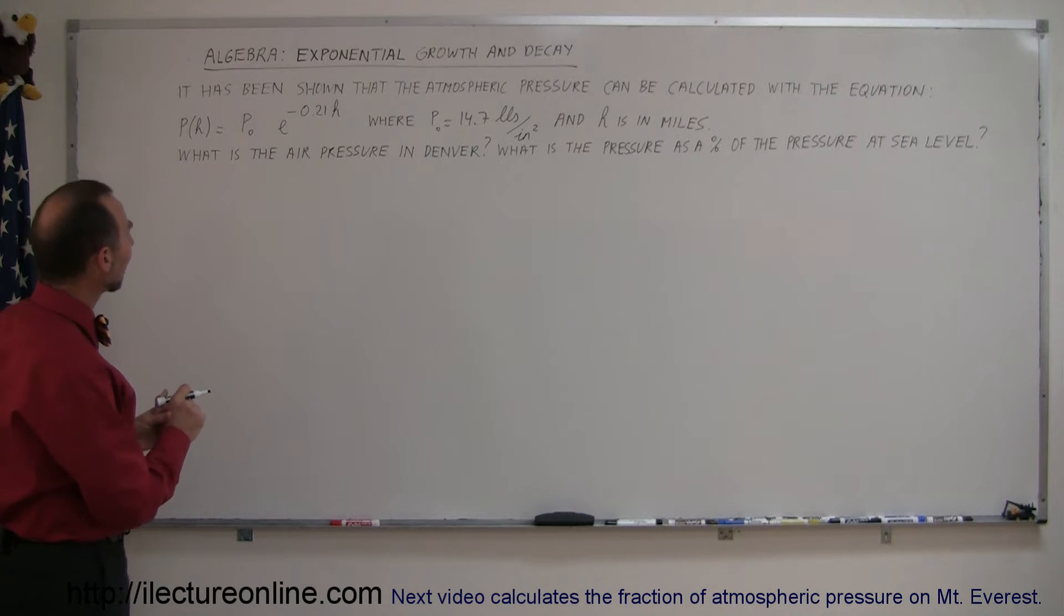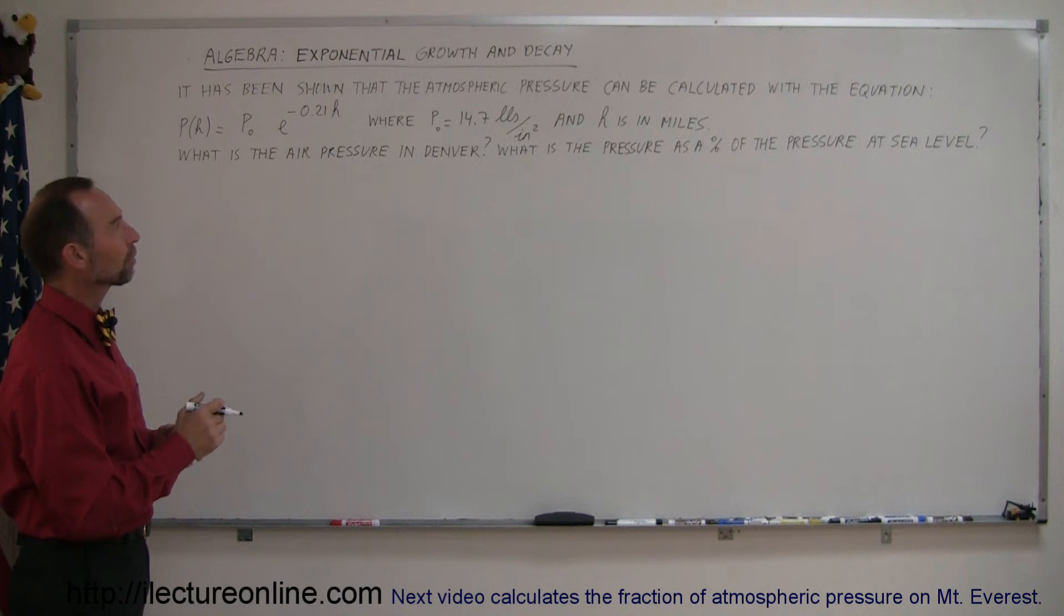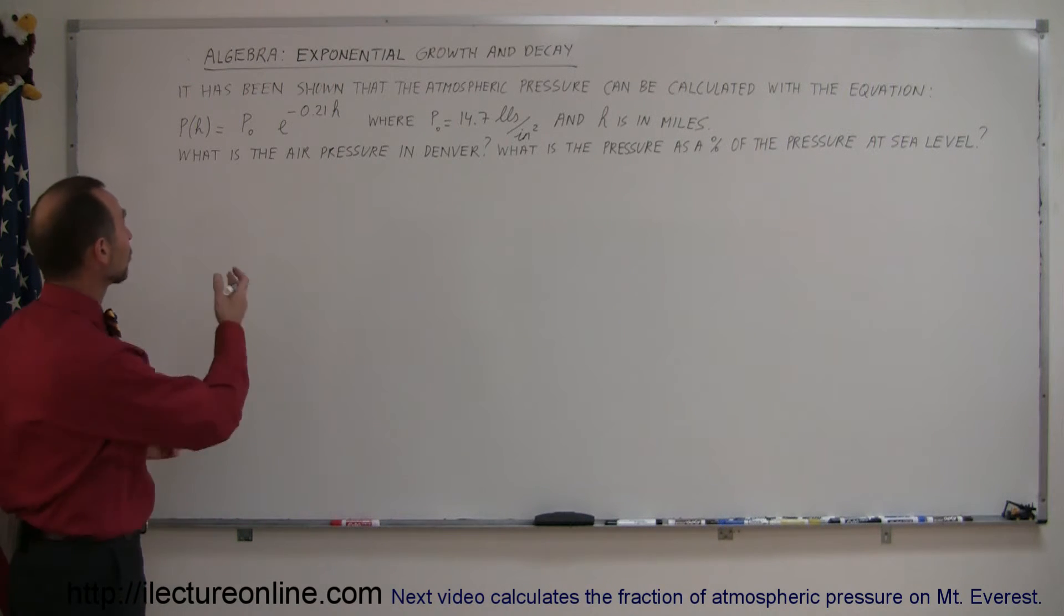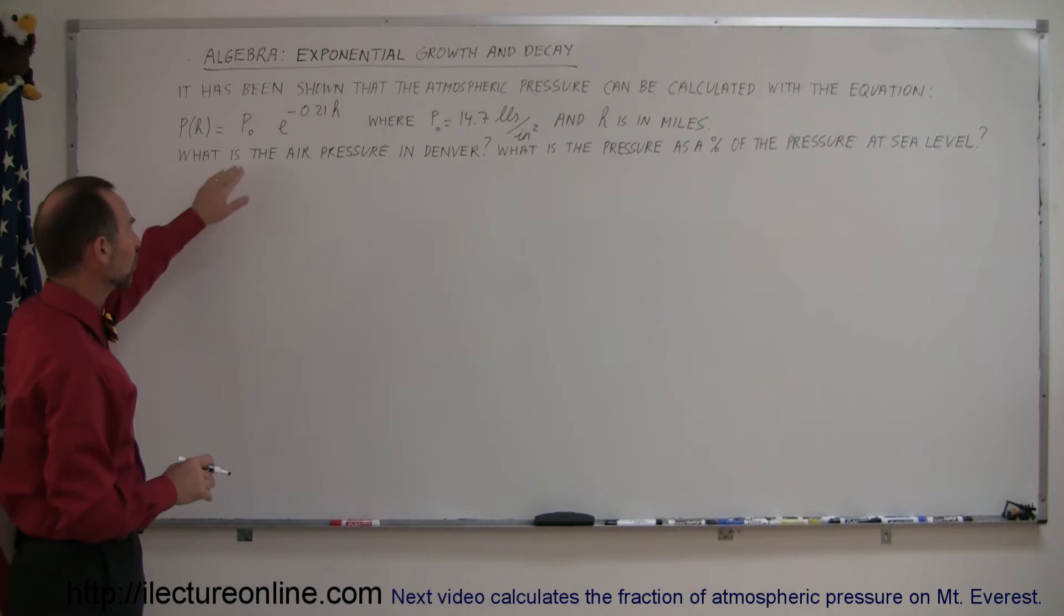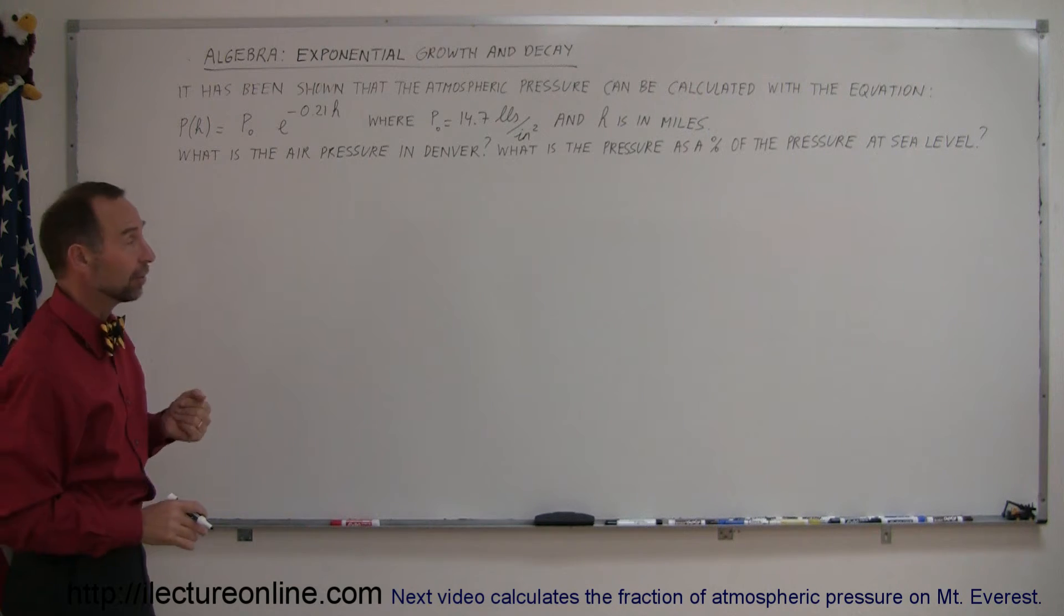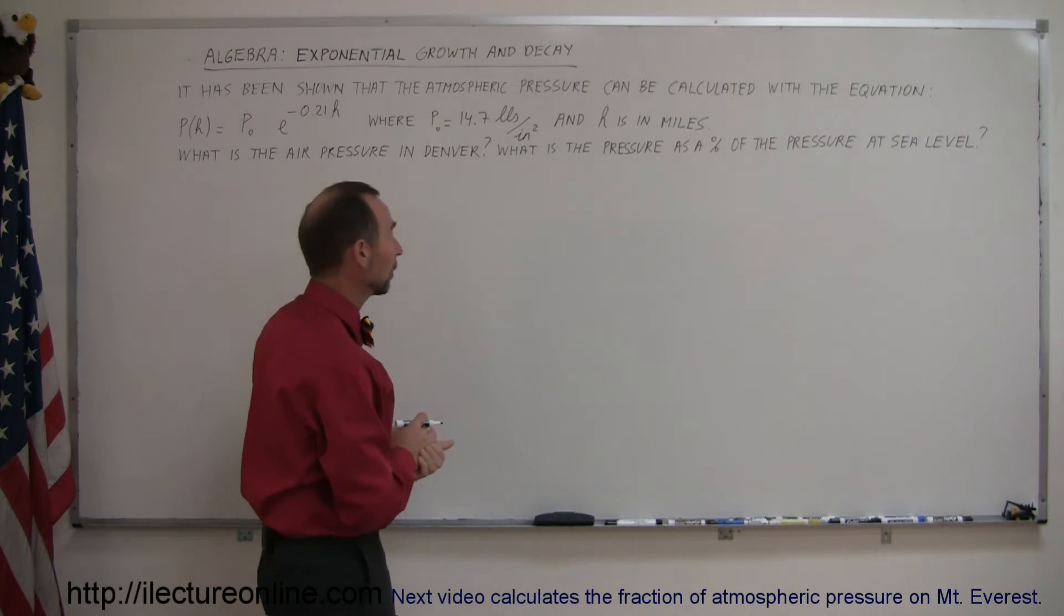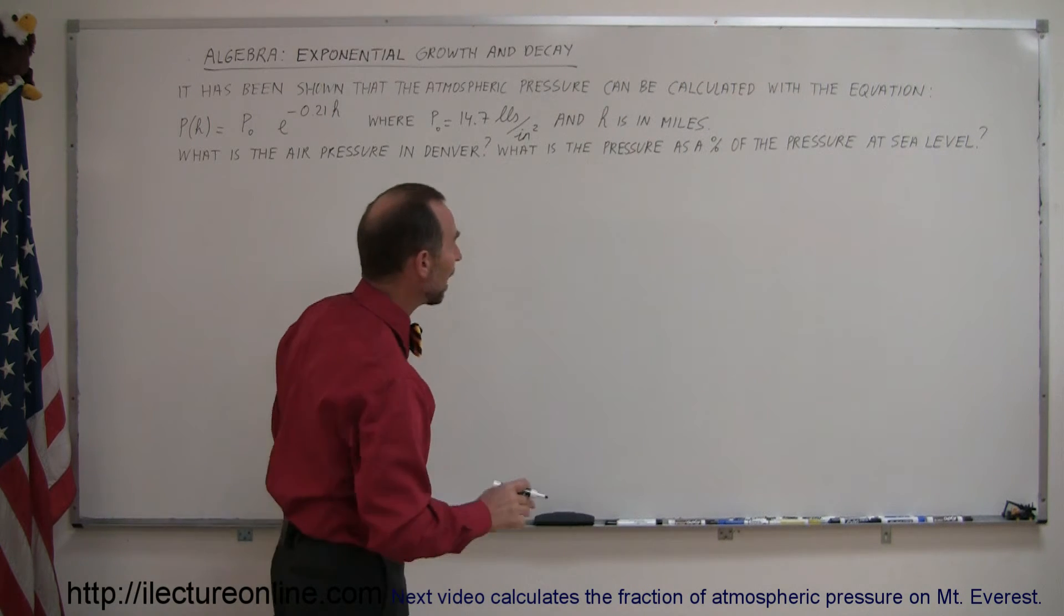All right let's read our problem. It has been shown that the atmospheric pressure can be calculated with the equation p equals p sub not e to the minus 0.21 h, where p sub not is 14.7 pounds per square inch, which is the air pressure at sea level, and h is expressed in miles.